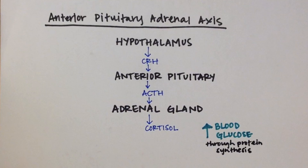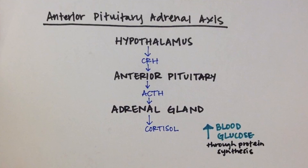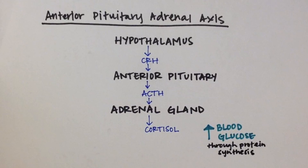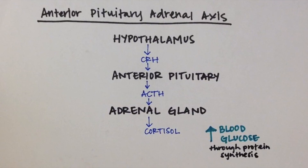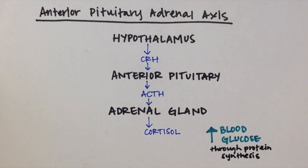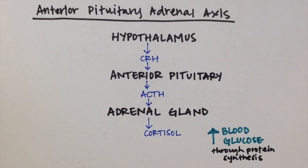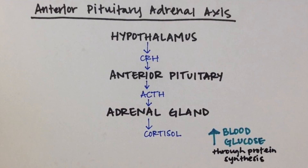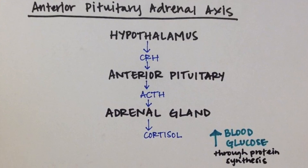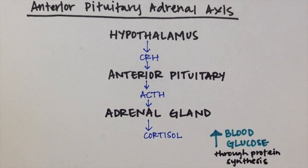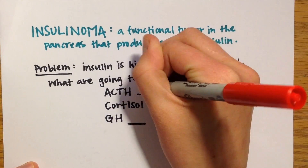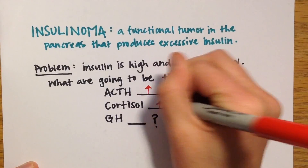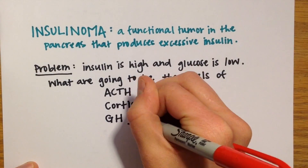Remember our anterior pituitary adrenal axis. ACTH comes from the anterior pituitary, as does growth hormone, and cortisol comes from the adrenal gland. If insulin is high, the body will want to regulate it to increase the blood glucose levels. Therefore, ACTH, growth hormone, and cortisol levels would all be high.